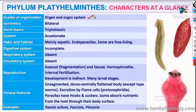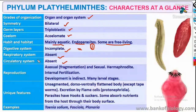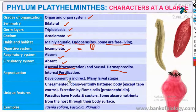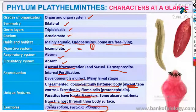They have organ and organ system level of organization, bilateral symmetry, triploblastic, acoelomate. They are mainly aquatic, internal parasites, and some are free-living. Incomplete digestive system — only one opening serving as both mouth and anus. No respiratory and no circulatory system. Asexual reproduction by fragmentation. Hermaphrodite with internal fertilization, indirect development. Unsegmented, dorsoventrally flattened body except tapeworm. Excretion by flame cells. Parasites have hooks and suckers. Examples: Taenia solium, Fasciola, and Planaria.